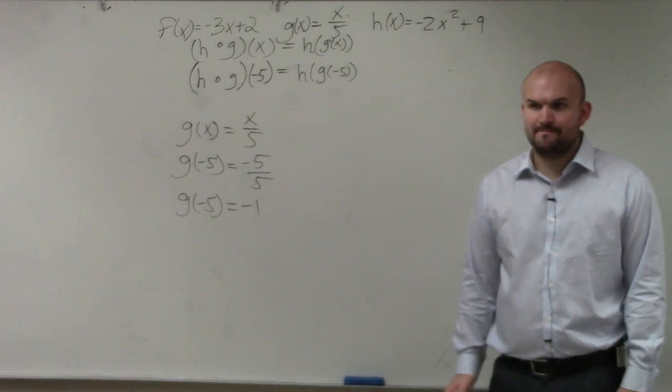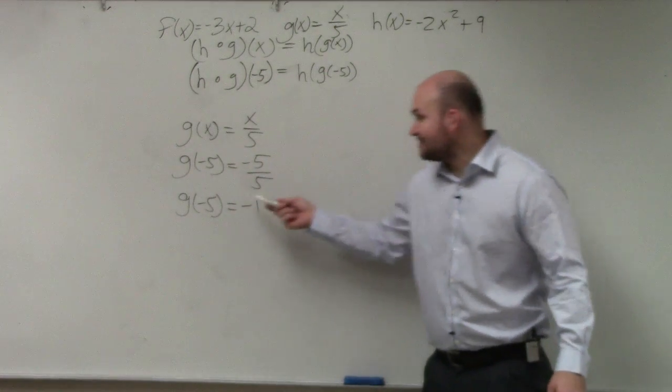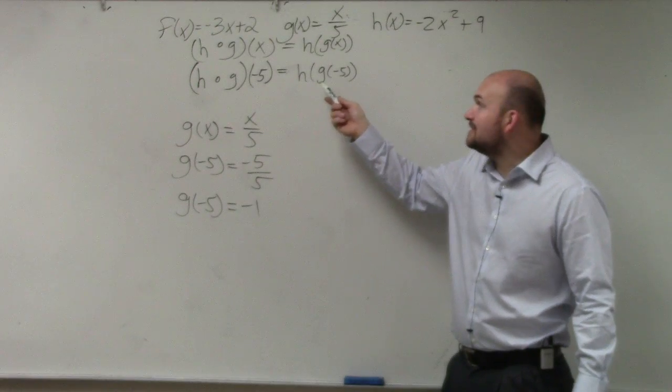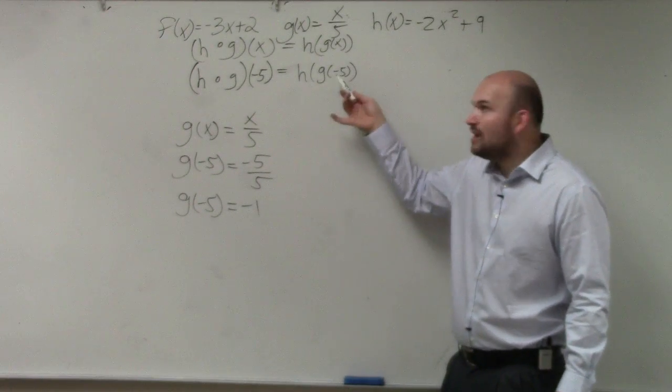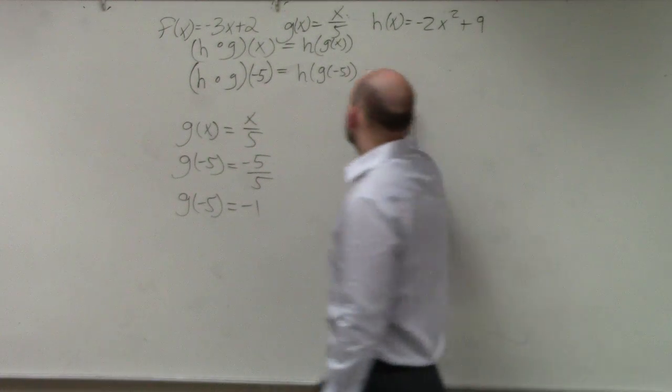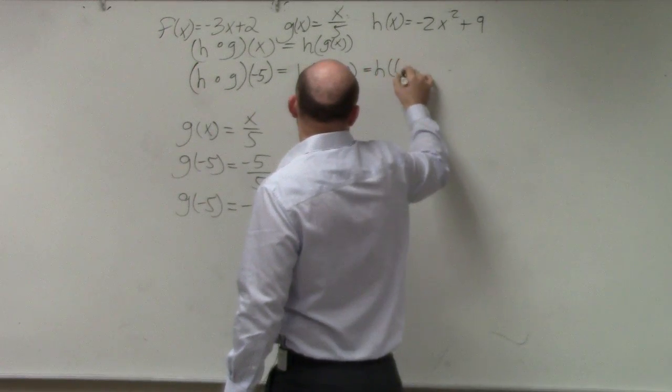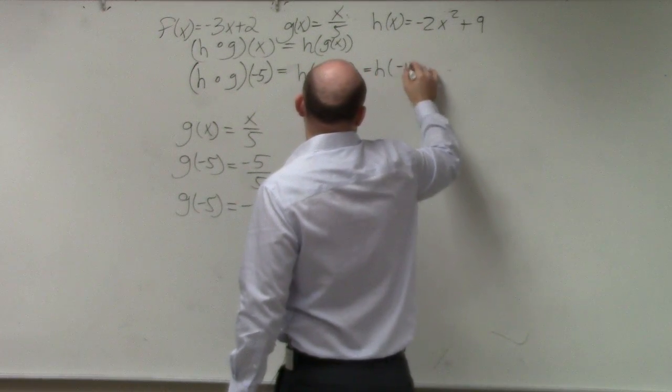Is everybody OK with that? So do you guys agree g of negative 5 is equal to negative 1? So in reality, all I simply need to do is I can replace negative 1 for g of negative 5. So therefore, this is really h of negative 1.